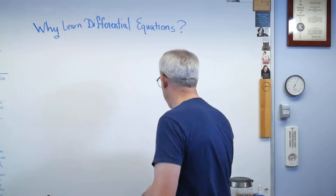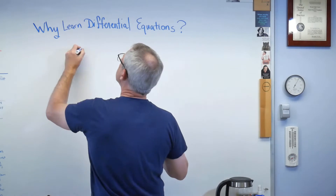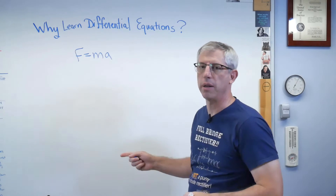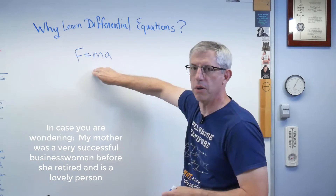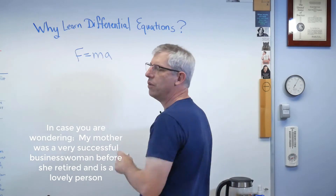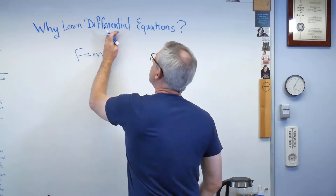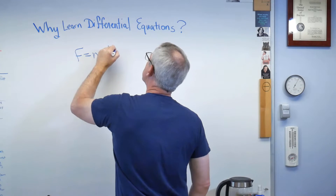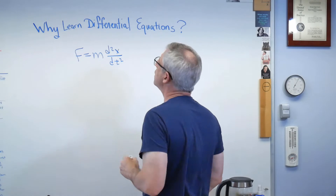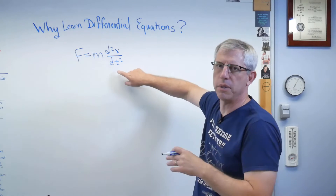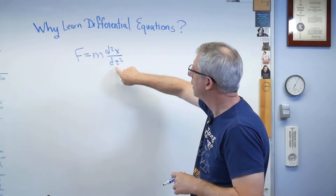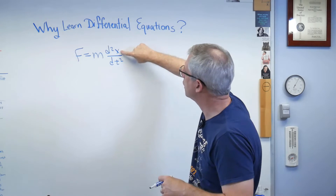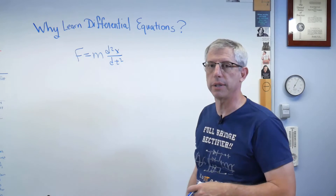Let's start with Newton's law. Everybody knows how to write this, right? Even people who really don't know what it means know how to write it — my mother knows how to write it. She doesn't have any idea what it means, but she knows how to write it. Well, this isn't what Newton wrote, really. What he wrote was a little closer to this. The difference is pretty much notational. See that? That's a second derivative — the second derivative of a position. Newton's law is a differential equation.